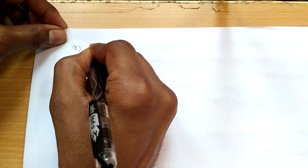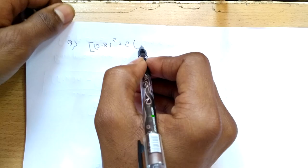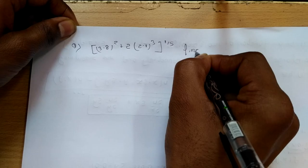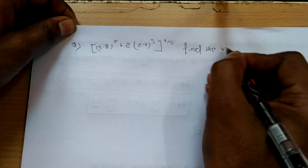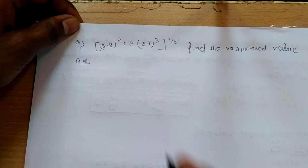Okay guys, in this lecture we will solve one more example based on errors and approximation. Let's take an example — find the approximate value.